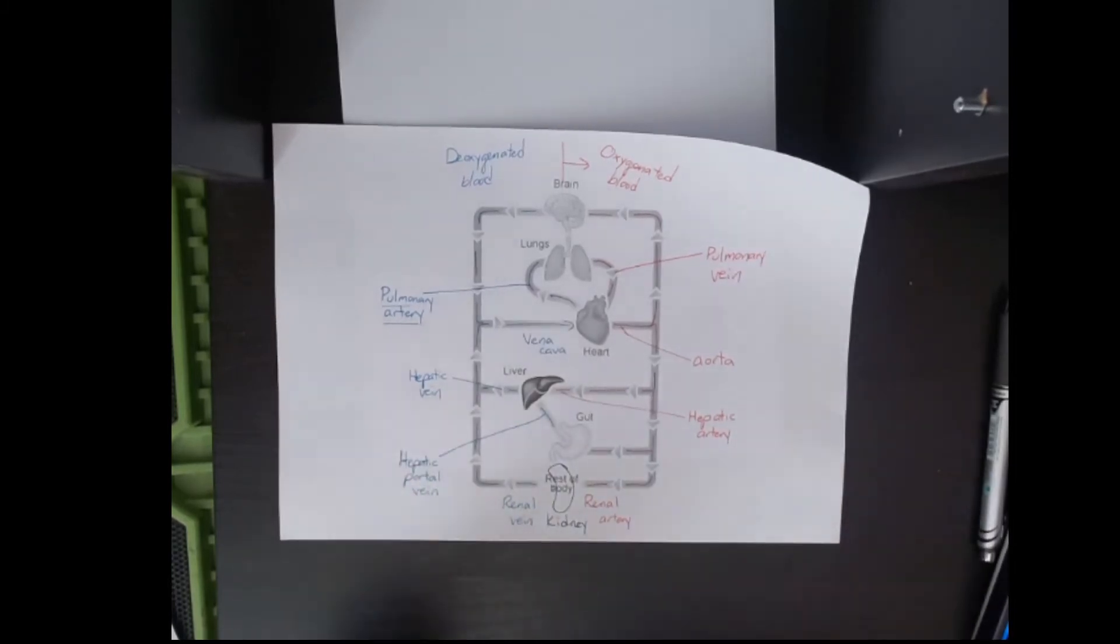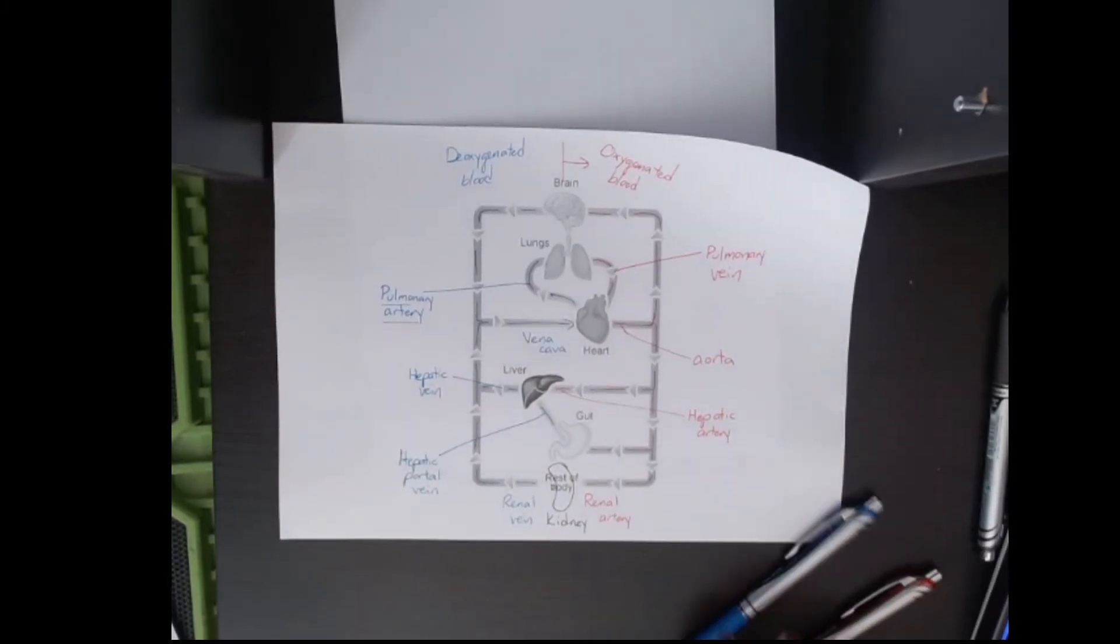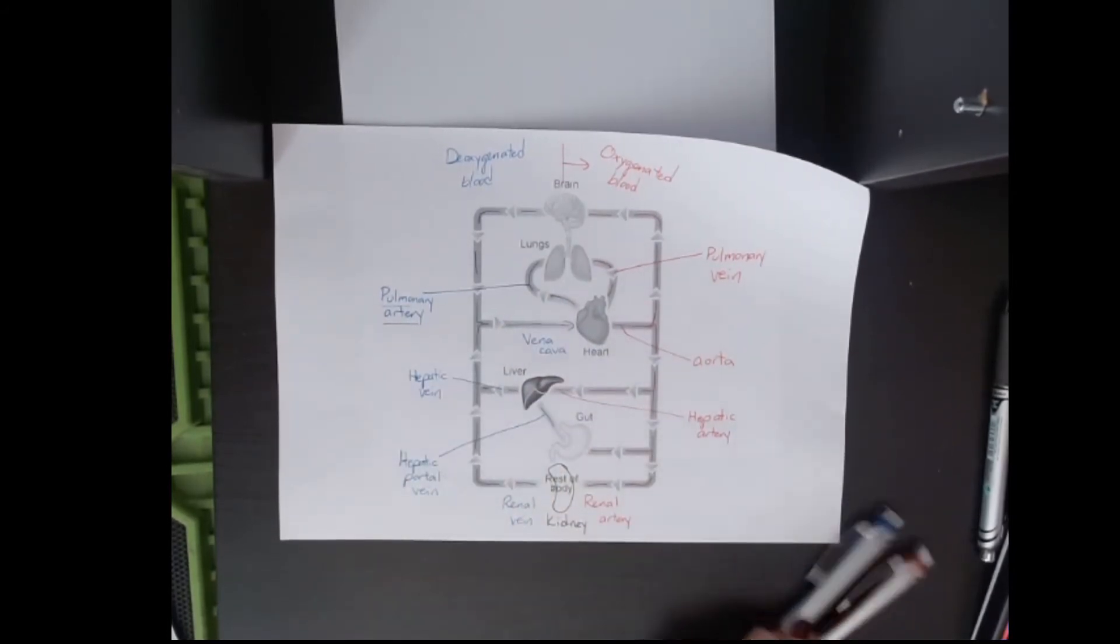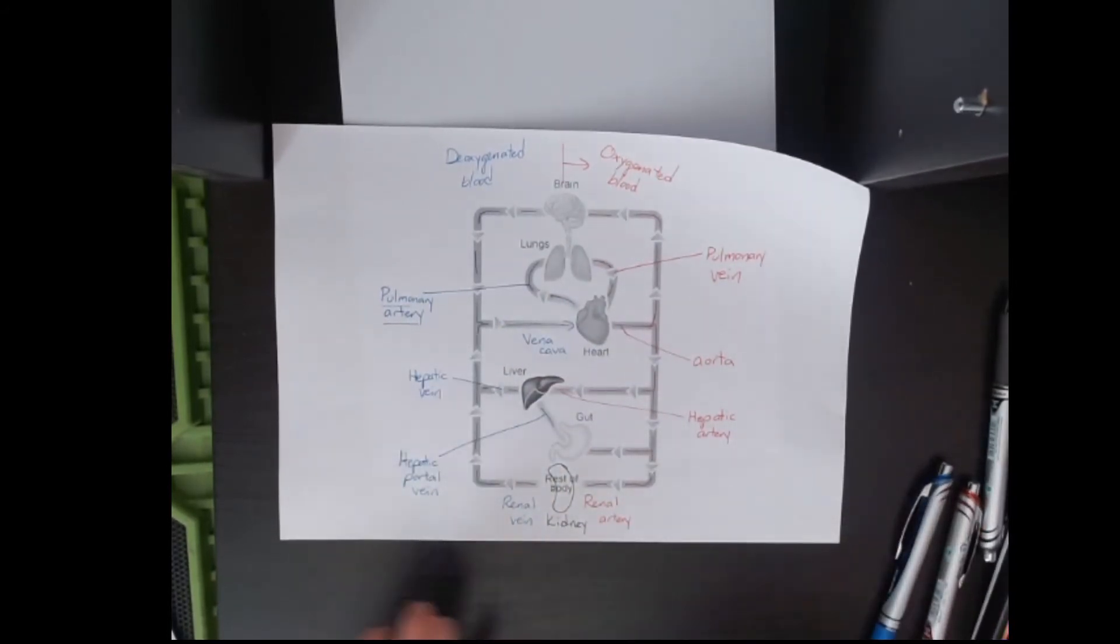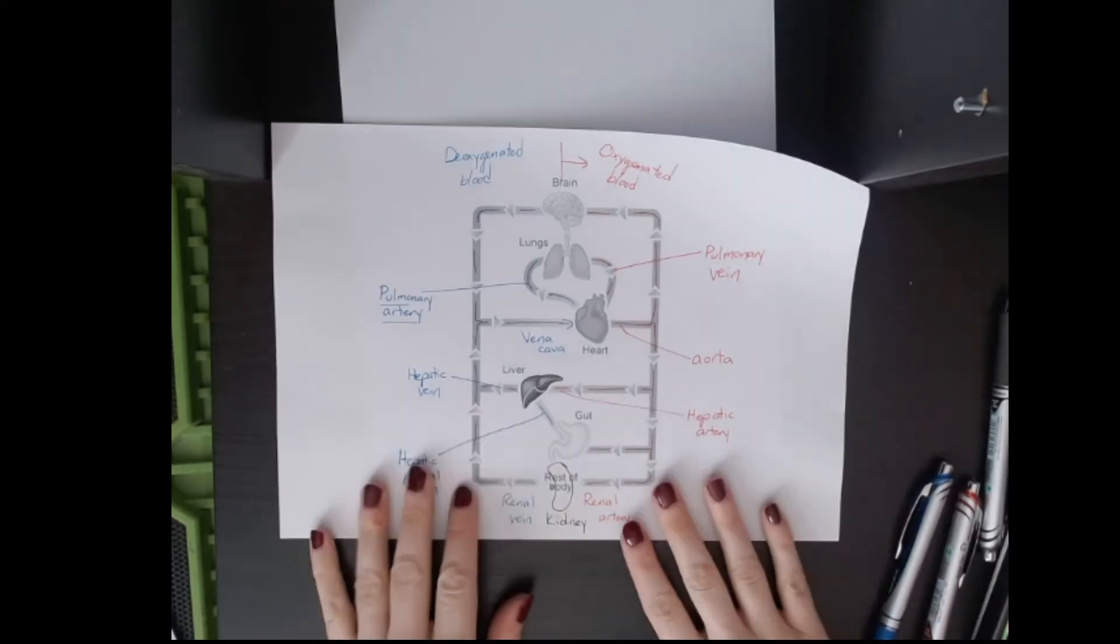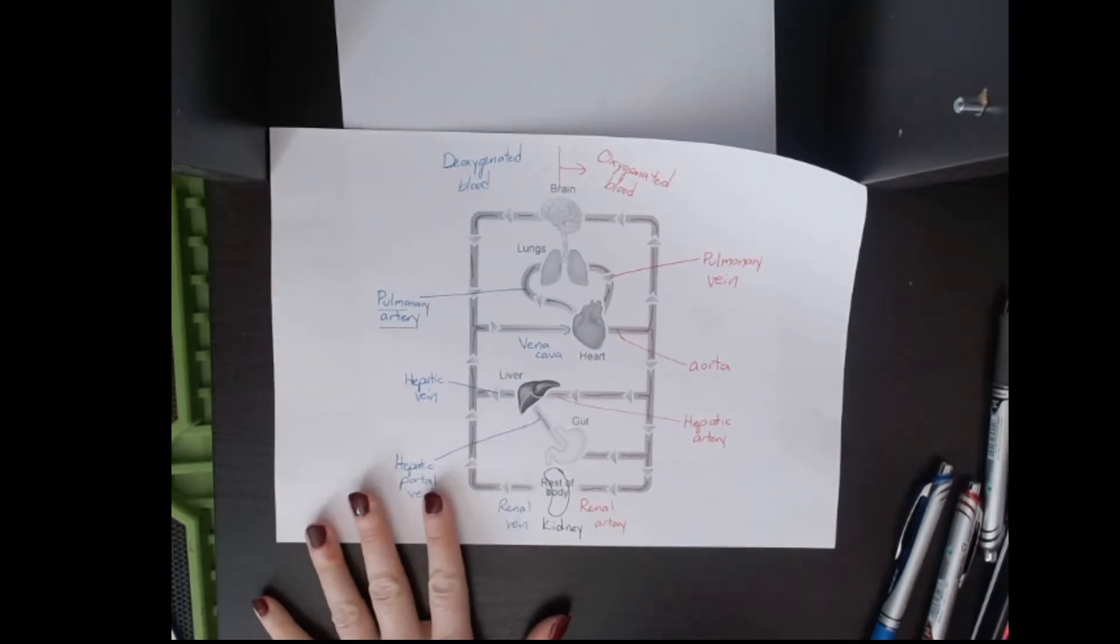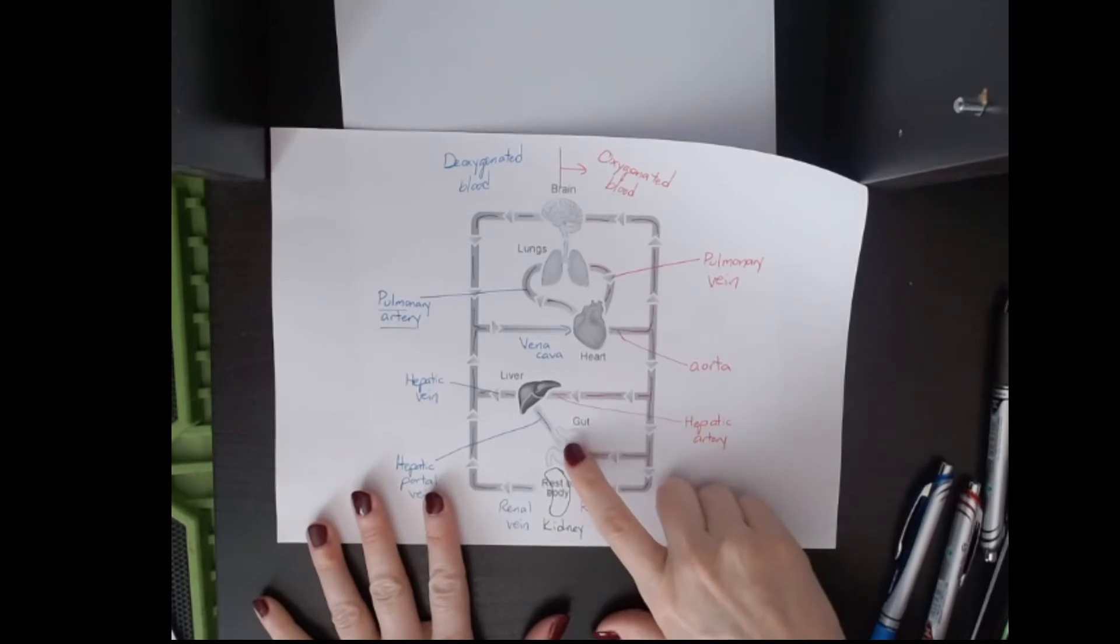Now, why do you need to know these? You don't just need to know their names. You also need to understand what is happening in each of these locations in the body to understand what's going to be present in the blood. So let's say, for example, we are looking at glucose levels in the blood. You should know that glucose is absorbed from the products of digestion, so it's going to be absorbed in the small intestine, in the gut.